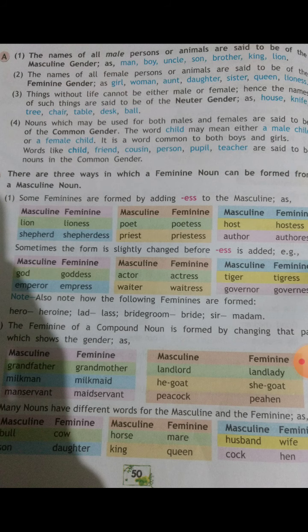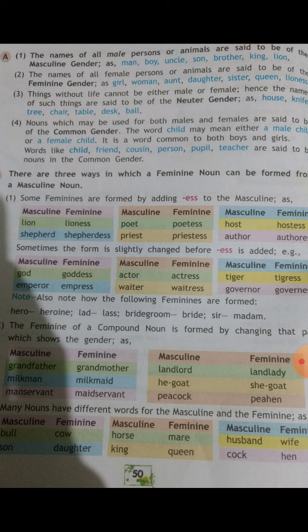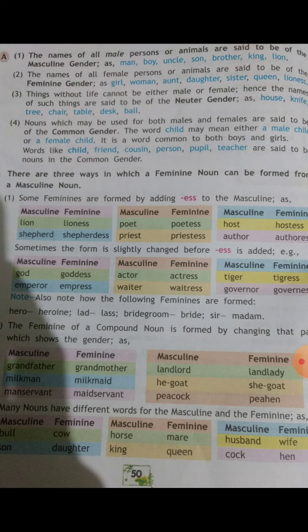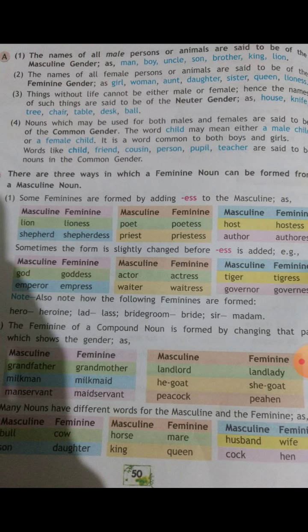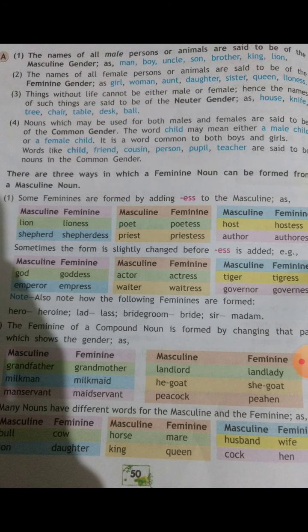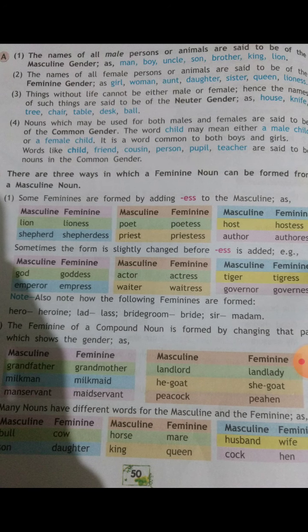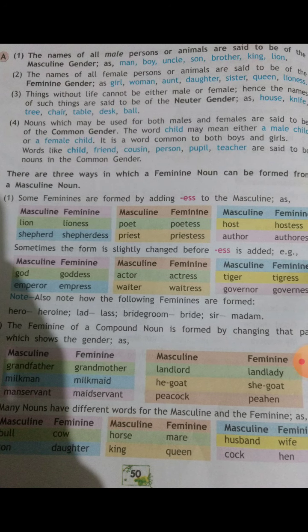Next is neuter gender. Example: 'The table is made of wood.' In this example, the noun 'table' is the name of a thing without life, so it is therefore said to be of the neuter gender. Neuter means neither masculine nor feminine. Things without life cannot be either male or female, hence the names of such things are said to be of the neuter gender. Examples: house, tree, chair, table, desk, wall, etc.